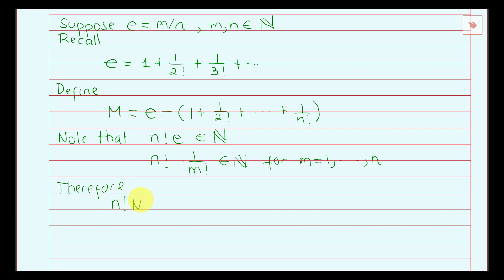Therefore, n factorial times m is a positive integer. Since n factorial times e is an integer, n factorial times 1 is an integer, n factorial times 1 over 2 factorial is an integer — each term is an integer. The sum or subtraction of integers gives another integer, so therefore n factorial times m is an integer.